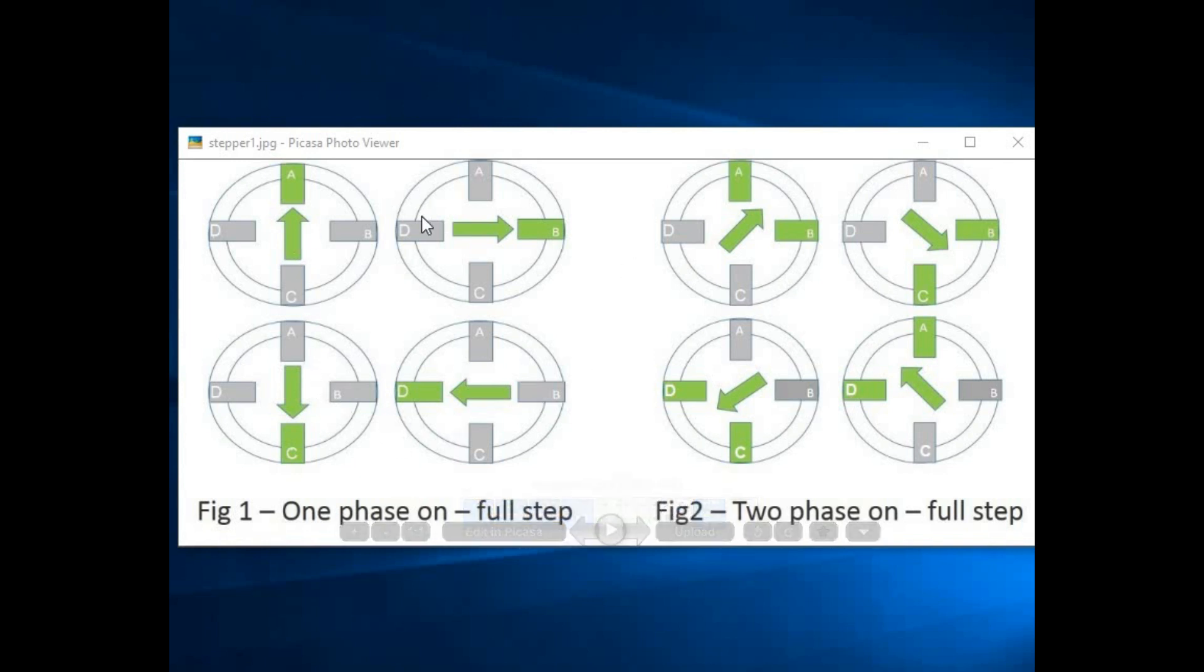This picture shows how the rotor complete one revolution, that means one complete cycle. If we energize coil A first, then the rotor will come to its position. Then if we energize coil B, then we can see the rotor moves from A to B. Then if we energize C, then the rotor will move from B to C. And then if we energize coil D, then the rotor will move from C to D. And if again we energize A, then the rotor will move from D to A. And thus one complete cycle will be completed.